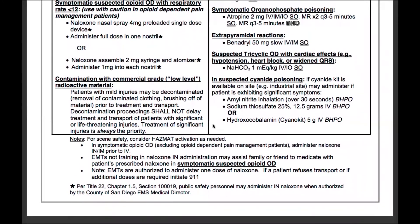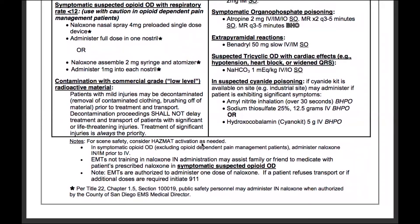For scene safety, consider hazmat activation as needed. In symptomatic suspected opioid overdose, excluding opioid pain management dependent patients, administer naloxone IM prior to IV. For us as EMTs, we only administer naloxone IN — intranasal. Paramedics administer IM intramuscular and IV intravenous; EMTs do not.